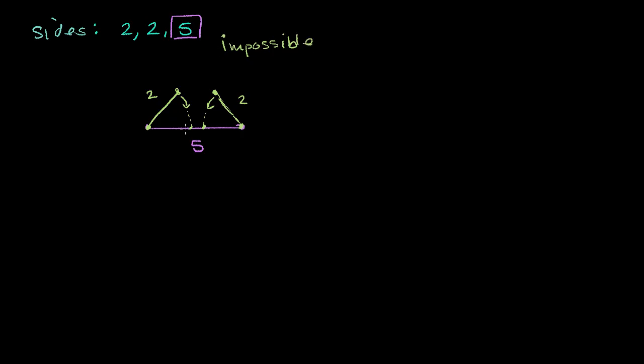And I think you're noticing a property of triangles. The longest side cannot be longer than the sum of the other two sides. Here the sum of the other two sides is 4. 2 plus 2 is 4. And the other side is longer. And even if the other side was exactly equal to the sum of the other two sides, you're going to have a degenerate triangle.